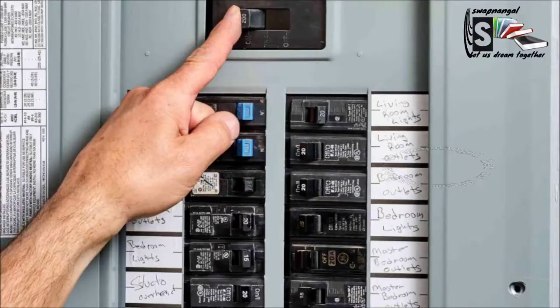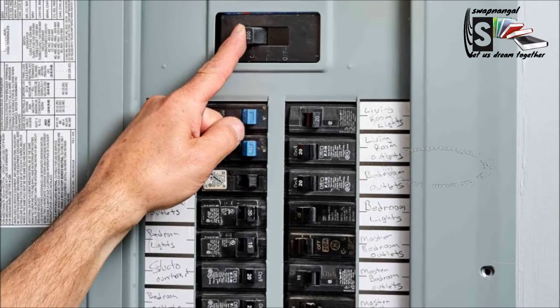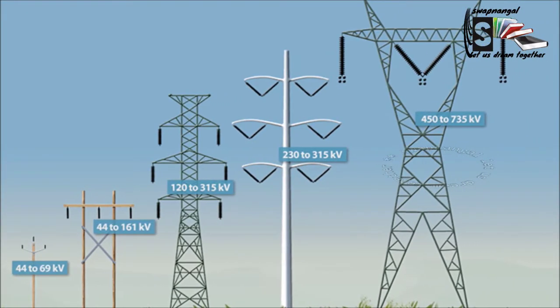Everyone should know their house's main electric circuit breaker location and how to turn it off. If a person is getting an electric shock, you must not touch the person until the main electric circuit breaker is turned off. This also applies when other electrical emergencies like short circuits occur. If the source of the electric shock is from a high-voltage wire or lightning, please contact your local emergency numbers.